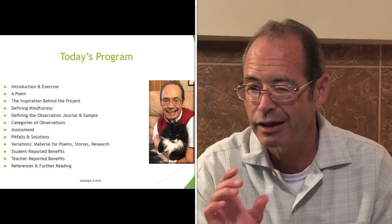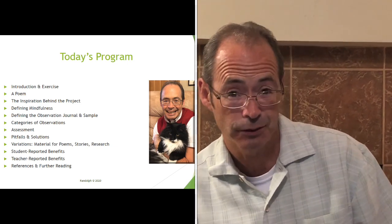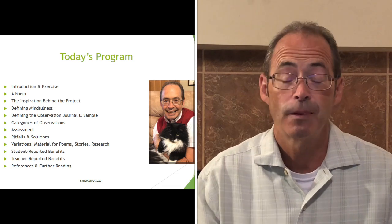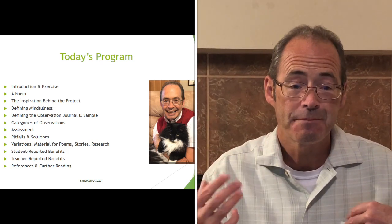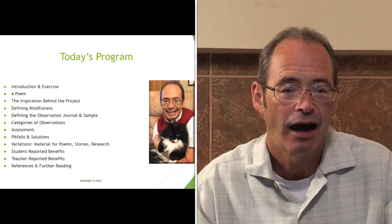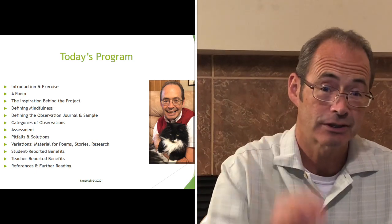I'm going to give you a short poem that I think exemplifies the importance of observation. Then I'll give you four of the inspiring aspects that helped me create the observation journal project. I want to define mindfulness, because that's going to be a key element. Then I'll define the observation journal itself and give you two samples — one that I wrote based on a student's observation, and one from a student from a few years ago. Then I'll go over the six categories of observations, and then the assessment rubric to help you avoid the same problems I encountered.